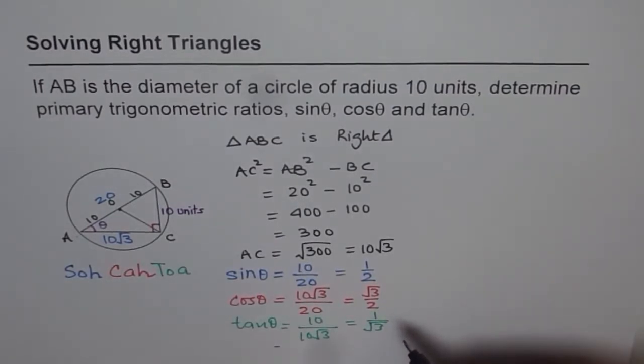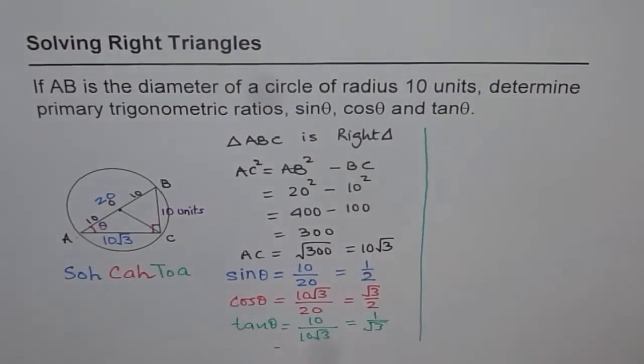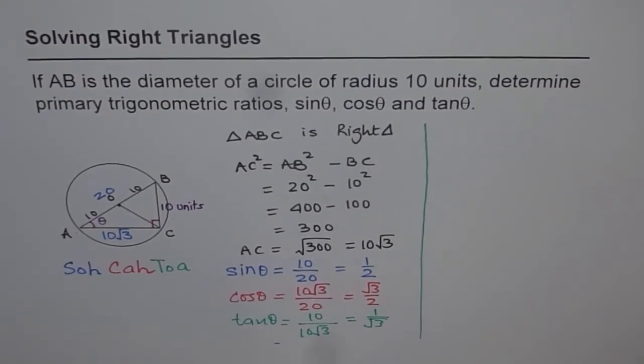So we get all our values. That is one way we can solve this triangle. Try to understand how we did it.